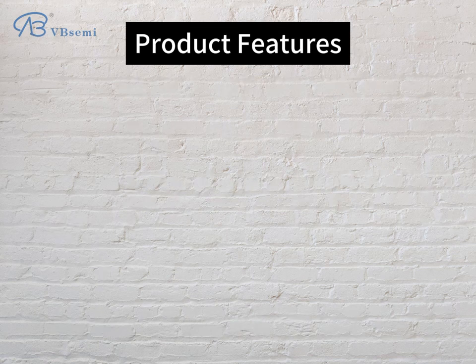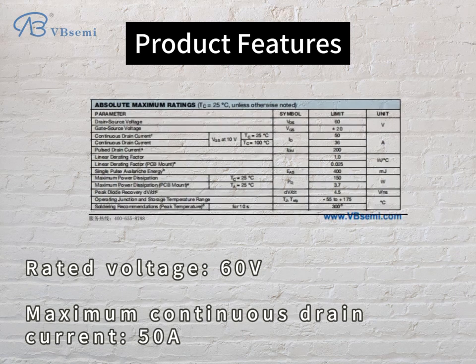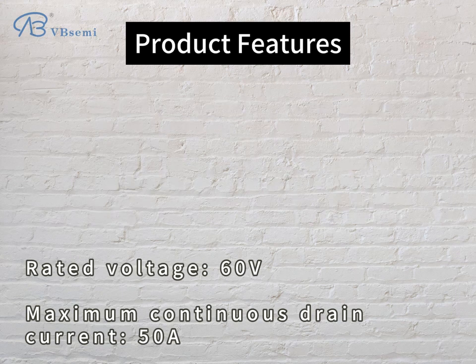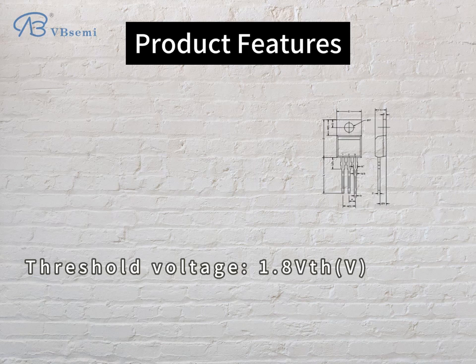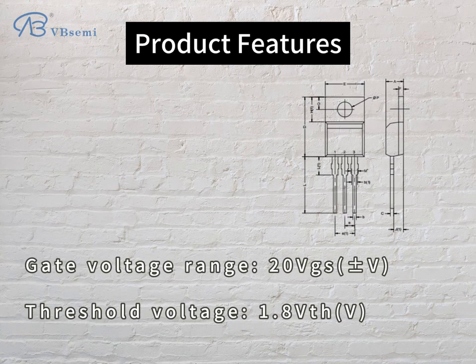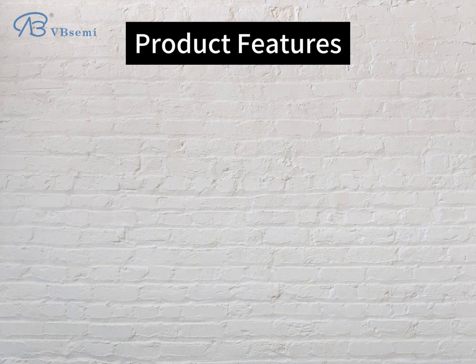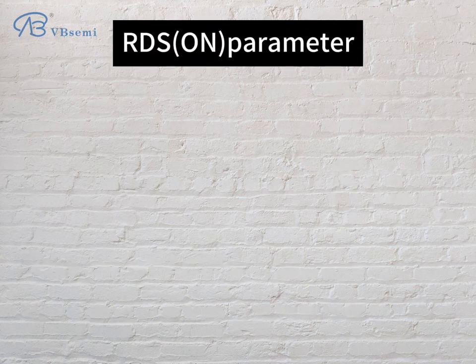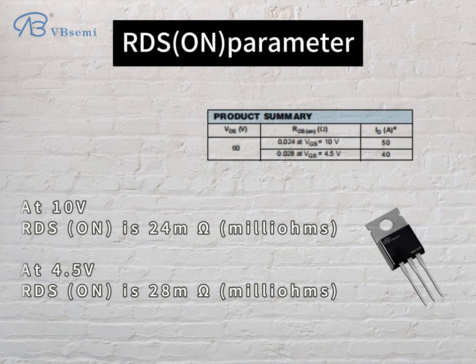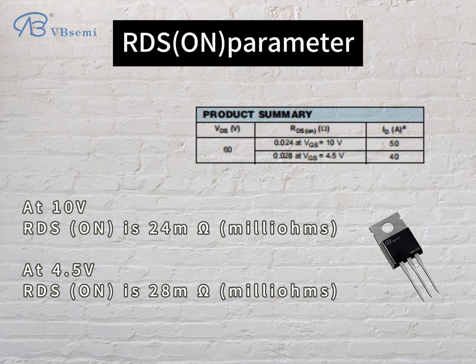Product features: rated voltage 60V, maximum continuous drain current 50A. Gate voltage range ±20V GS, threshold voltage 1.8V. RDS(on) parameter: at 10V, RDS(on) is 24mΩ; at 4.5V, RDS(on) is 28mΩ.